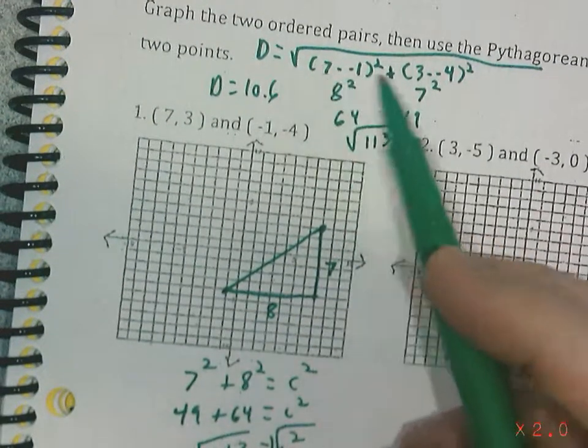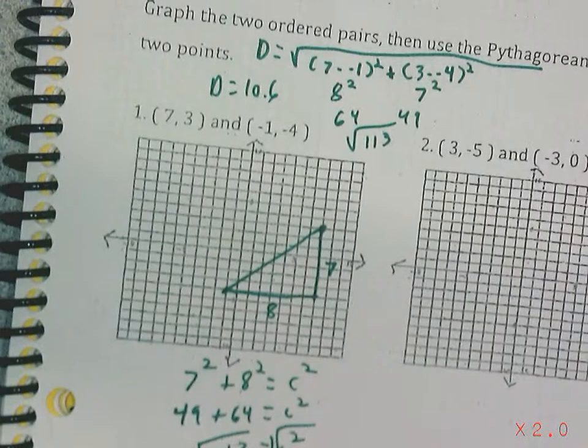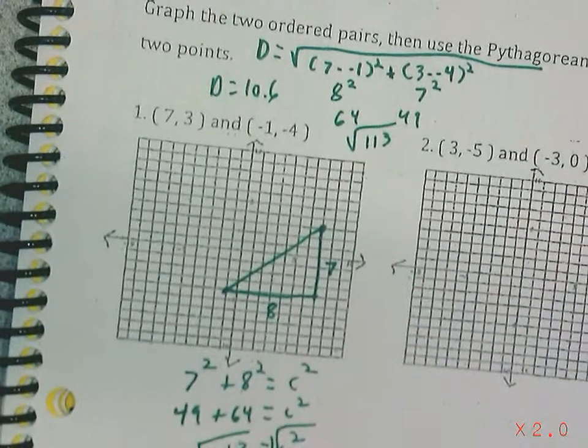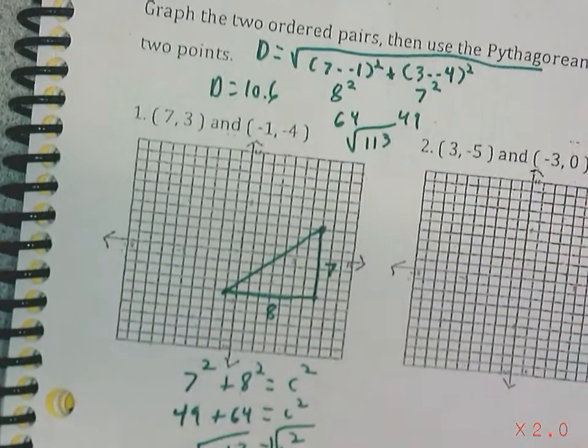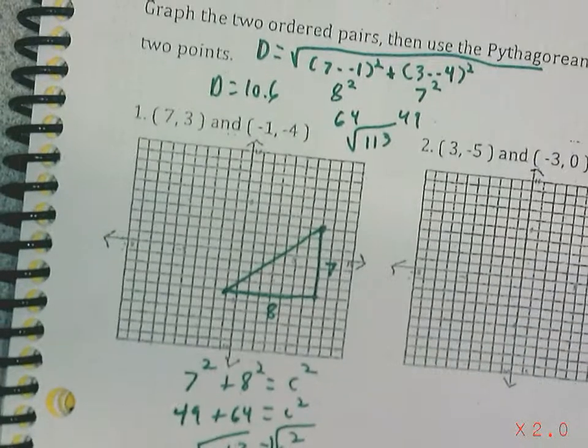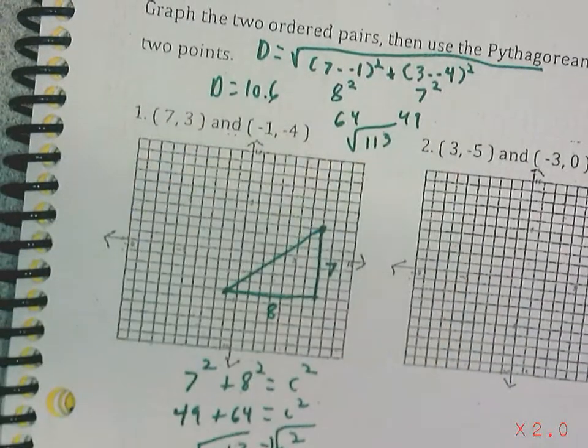The only added step with the distance formula is you subtract two numbers. And that's really it. So the distance formula really is not any more complicated than the Pythagorean theorem. You can use either if you have a graph. But if you don't have a graph, this gives you another option.